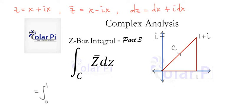z bar, that's x minus ix, right? And then times dz, which is dx plus i dx.